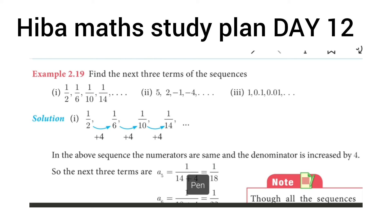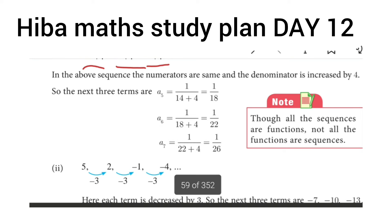Day 12, we'll work example 2.19. Find the next three terms. We will complete the next three terms. The sequence is 1 by 2, 1 by 6, plus 4, plus 4, 1 by 10, plus 4, 1 by 14. We will complete the next three terms.